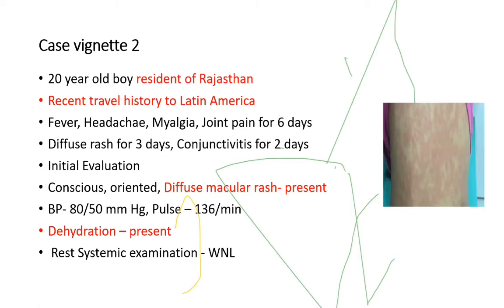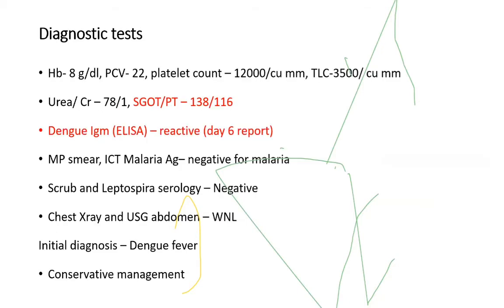Second case scenario: a 20-year-old from Rajasthan with recent travel history to Latin America presented with fever, headache, myalgia, and joint pain for 6 days, diffuse rash for 3 days, and conjunctivitis for 2 days. On initial evaluation, the patient was hypotensive and dehydrated with diffuse macular rash. Rest of the systemic examination was within normal limits.